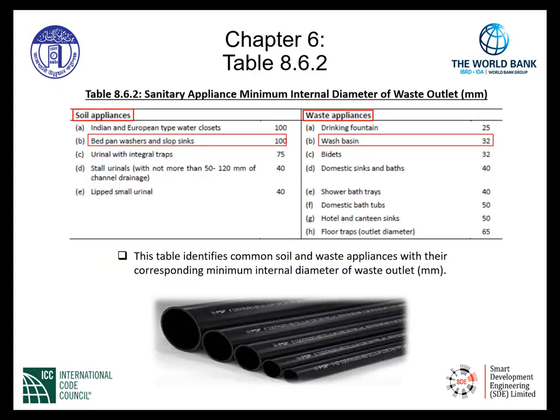Referencing Table 8.6.2 — sanitary appliance minimum internal diameter of waste outlet — soil appliances such as bedpan washers and slop sinks require a minimum internal diameter of 100 mm. Waste appliances such as a wash basin must have a minimum internal diameter of 32 mm.